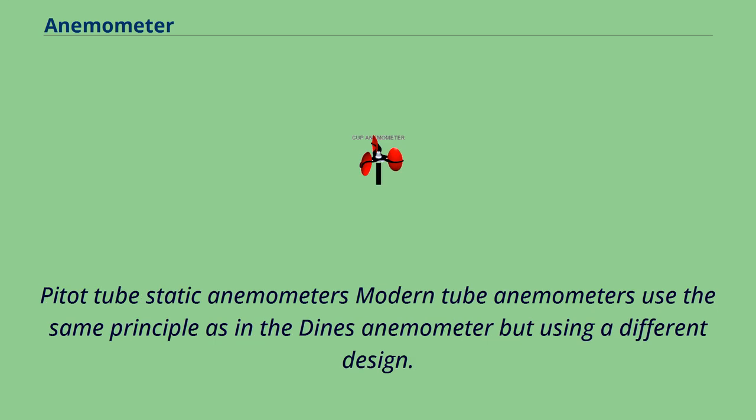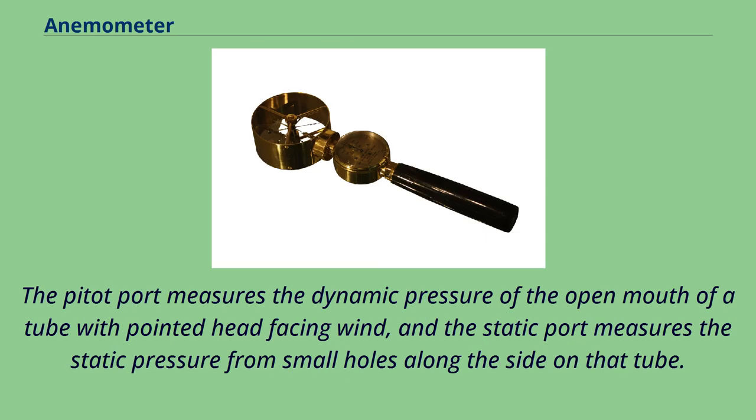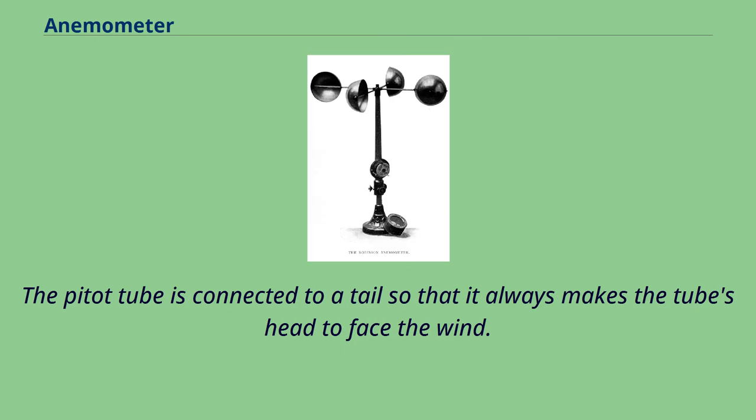Modern tube anemometers use the same principle as in the Dines anemometer but using a different design. The implementation uses a Pitot-static tube which is a Pitot tube with two ports, Pitot and static, that is normally used in measuring the airspeed of aircraft. The Pitot port measures the dynamic pressure of the open mouth of a tube with pointed head facing wind, and the static port measures the static pressure from small holes along the side on that tube. The Pitot tube is connected to a tail so that it always makes the tube's head to face the wind.